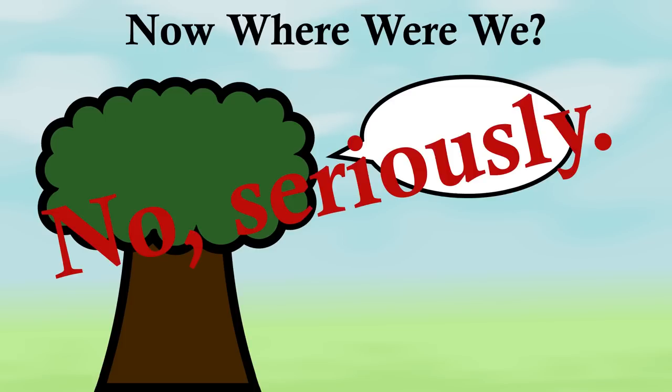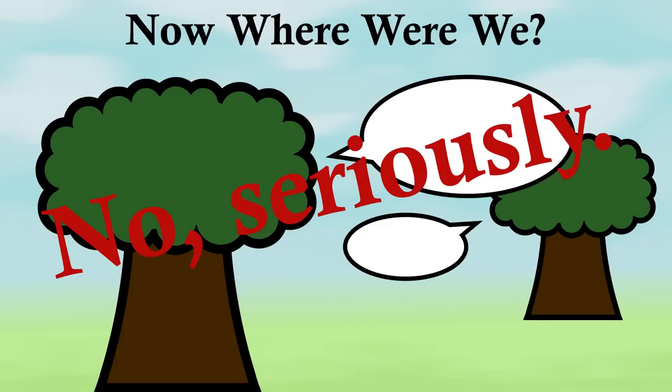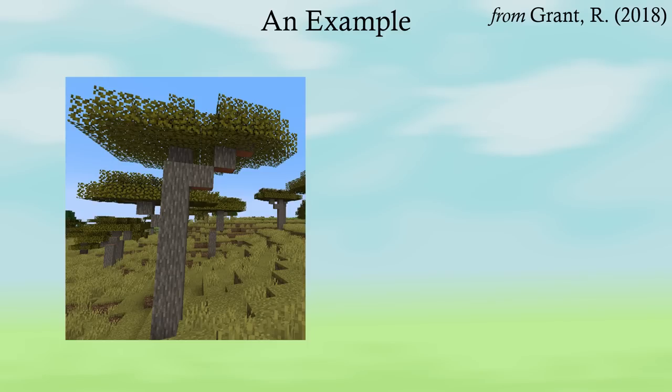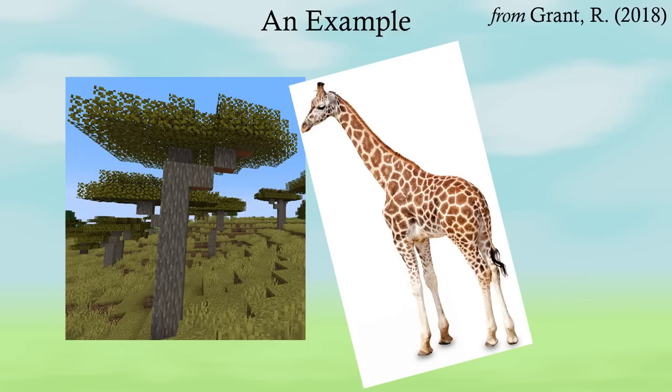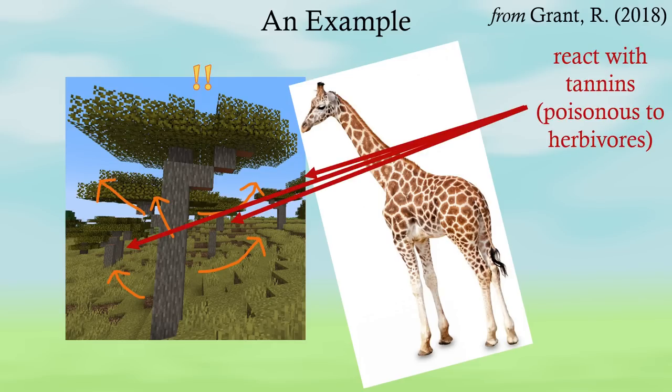Trees can talk. Seriously. Trees communicate with each other. Let me give you an example. When an acacia tree's leaf is bitten by a giraffe, it senses this and emits the gas ethylene, telling its neighbors to pump poisonous tannins into their leaves, essentially warning them of the danger and letting them respond to it.